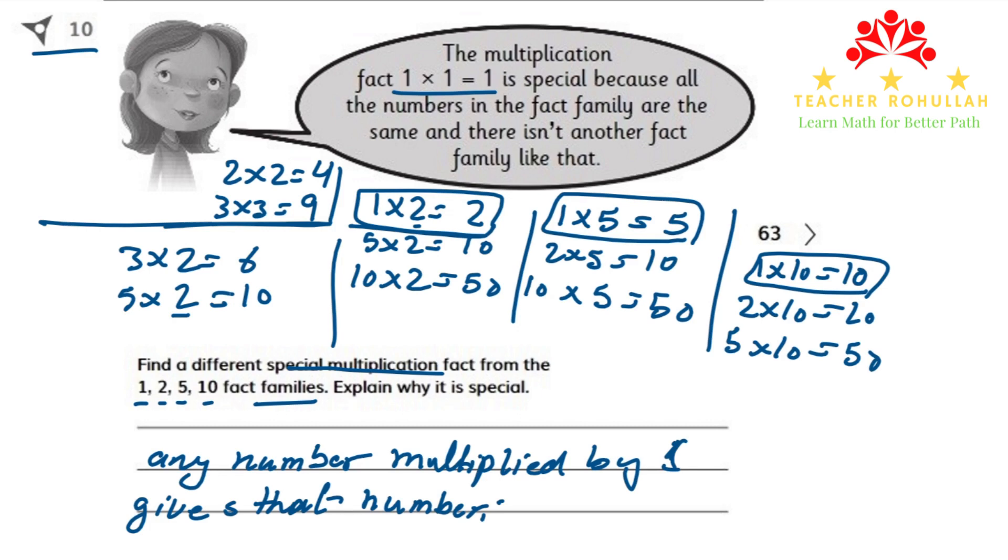So as a result, the multiplication fact that can be special is 1 multiplied by any number gives us the same number. I hope it makes sense for you and it helps you explain how this is special.